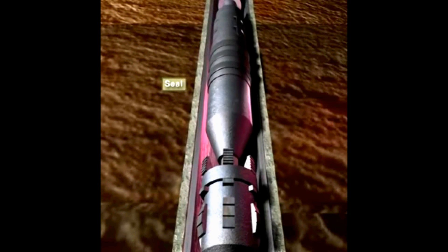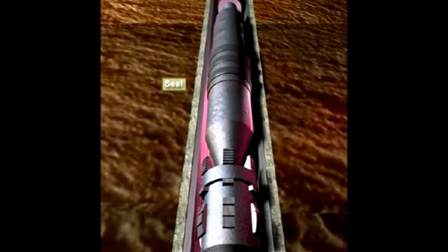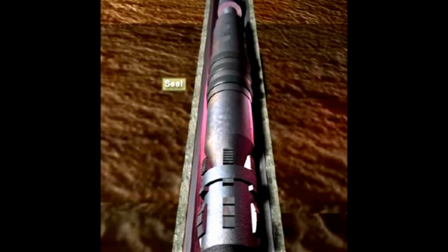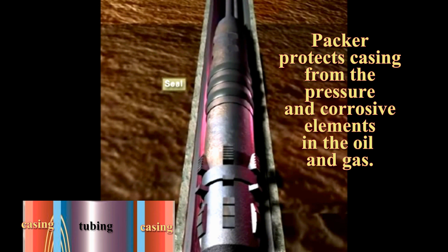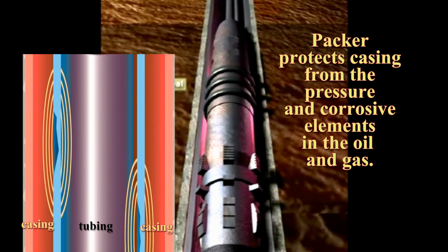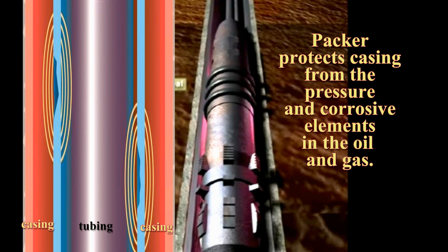Inside the tubing, a packer is inserted and used to seal off the tubing from the casing. By sealing off the tubing from the casing, the more easily replaceable tubing protects the more permanent casing from the pressure and corrosive elements found in the crude oil or gas as they pass to the surface.